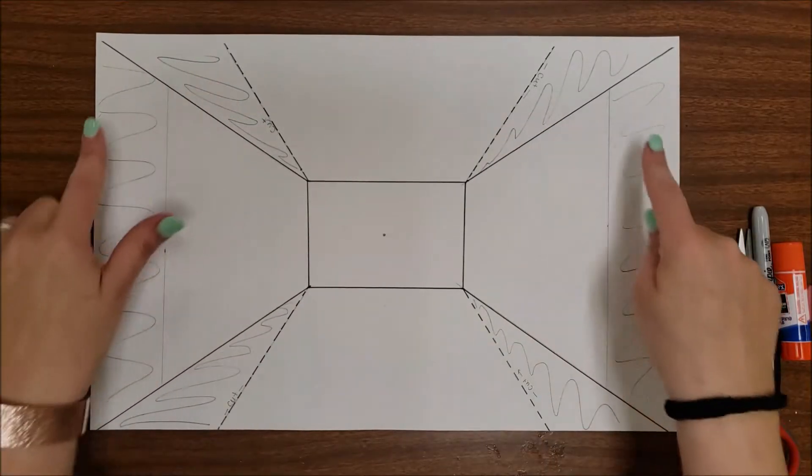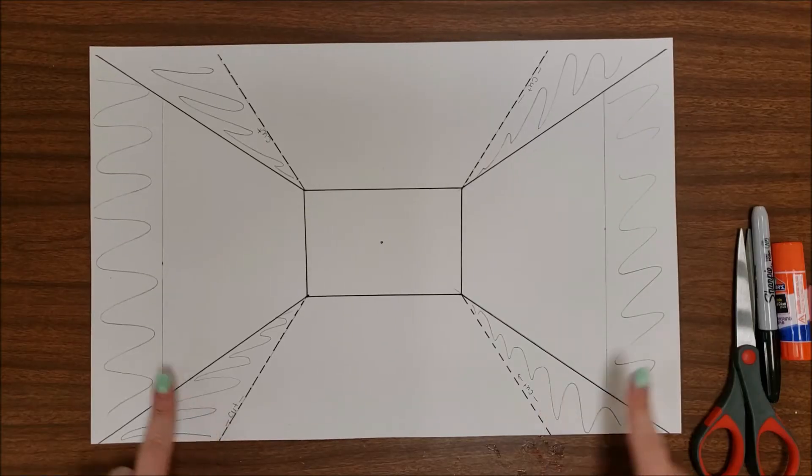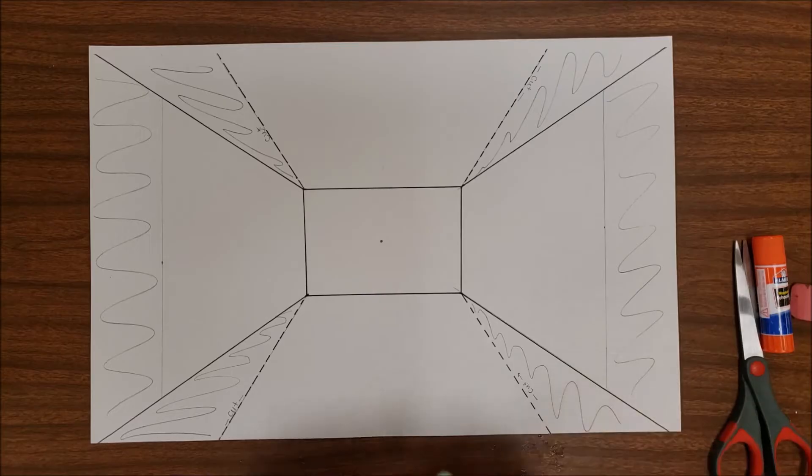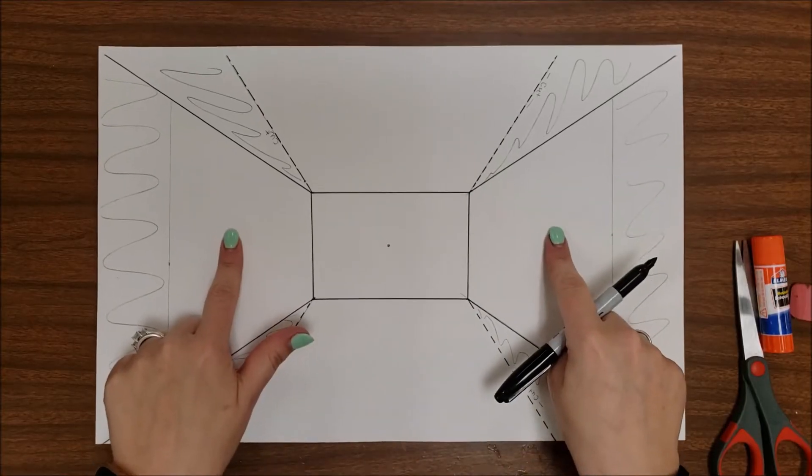For my students, anywhere where you can see these wiggly shapes, this is a do not draw area because these areas will not be seen in your final project. When we look at our space, we have a back wall, a ceiling, floor, and two side walls.